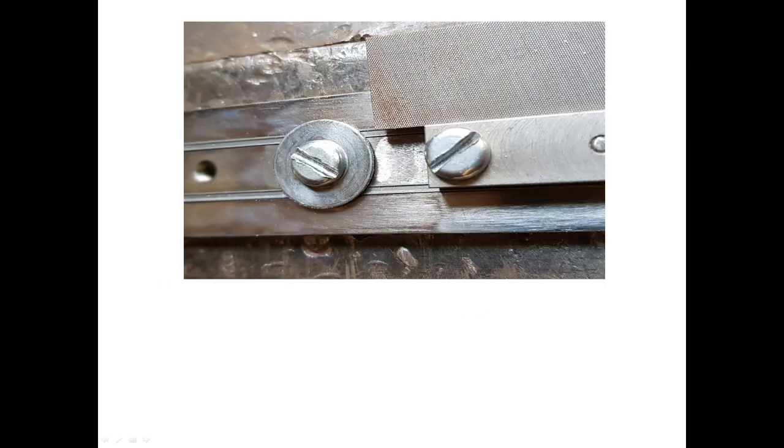Use the file with its safe edge towards the guide block to file away the head of the first rail until the rail is flush with the face of the jig. Then repeat for the other one. Remove the guide block. You might find that there is still a trace of the rail head left on the rail. This can be removed with a few more file strokes carefully using the foot of the rail as a guide for the safe edge of the file.